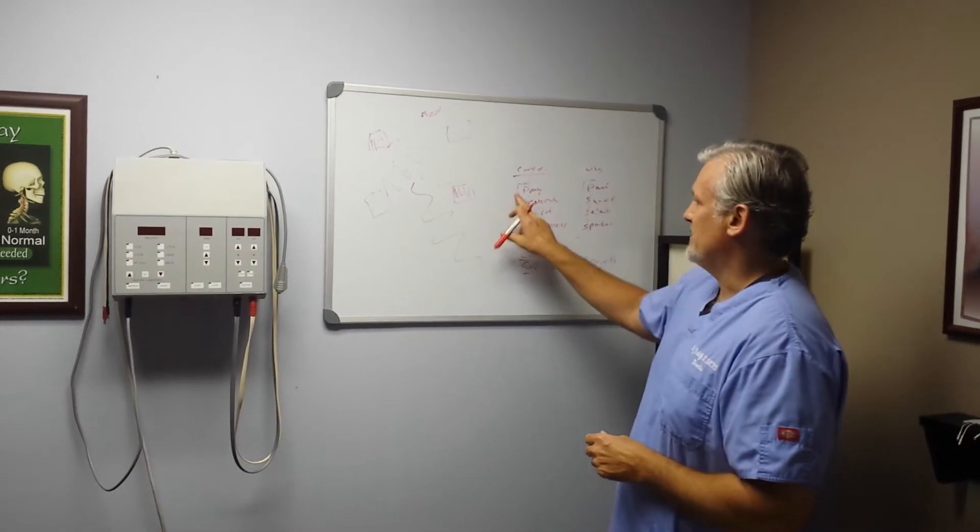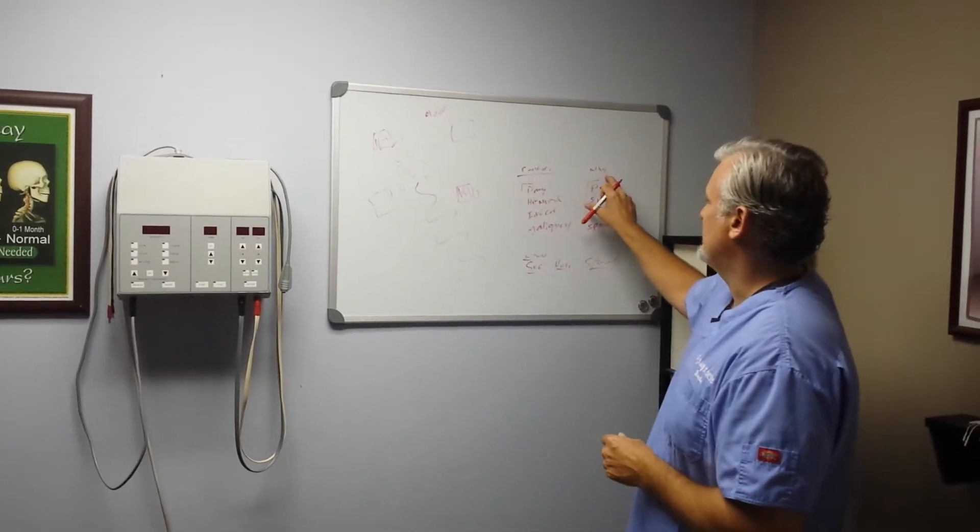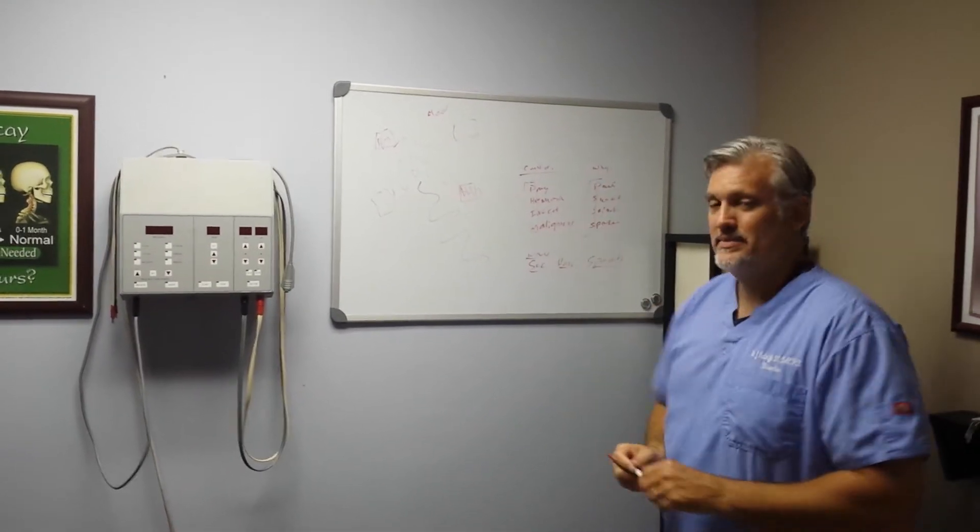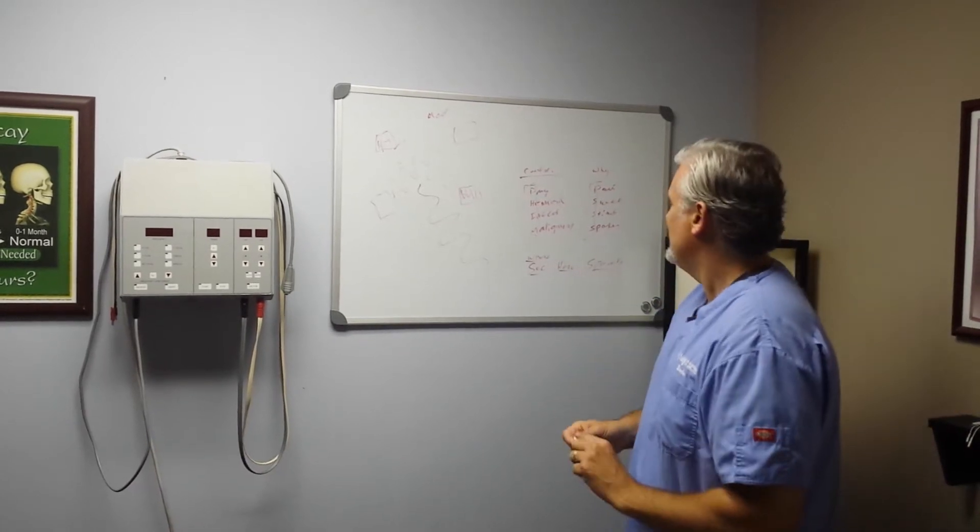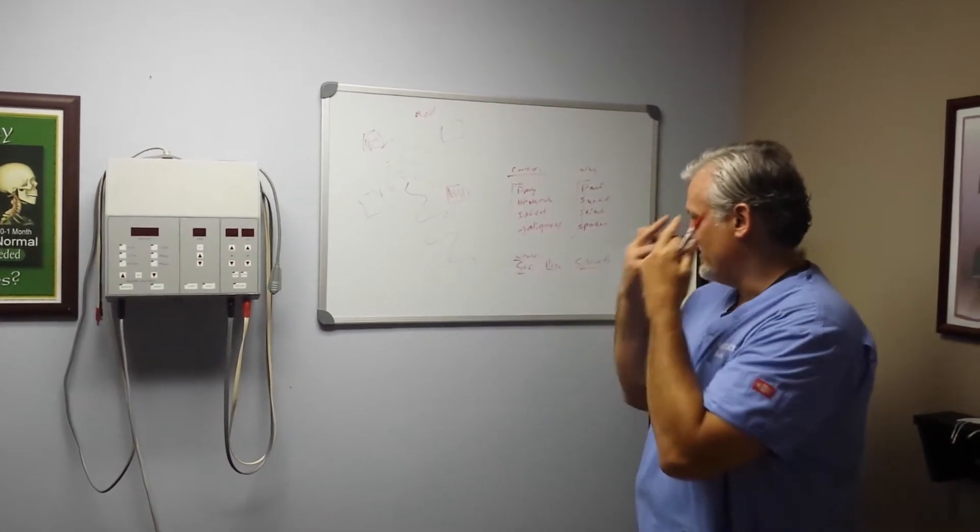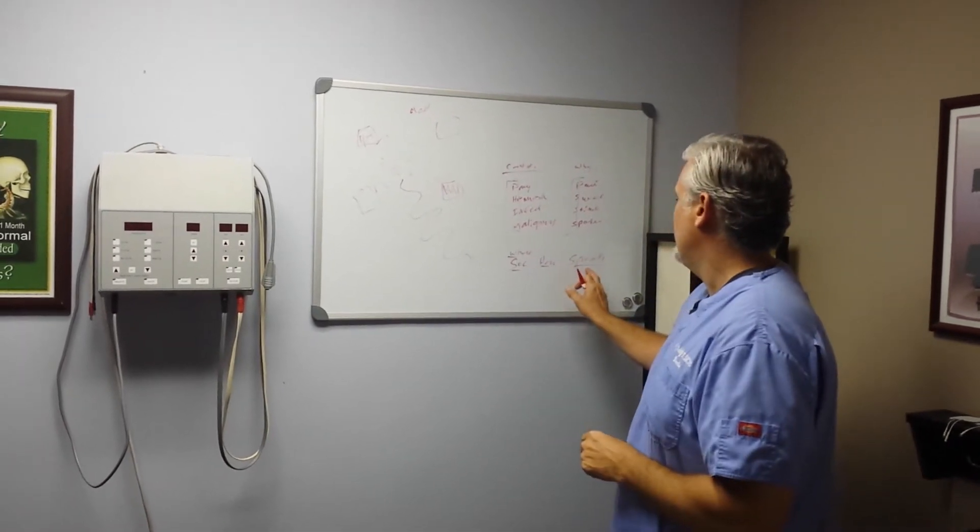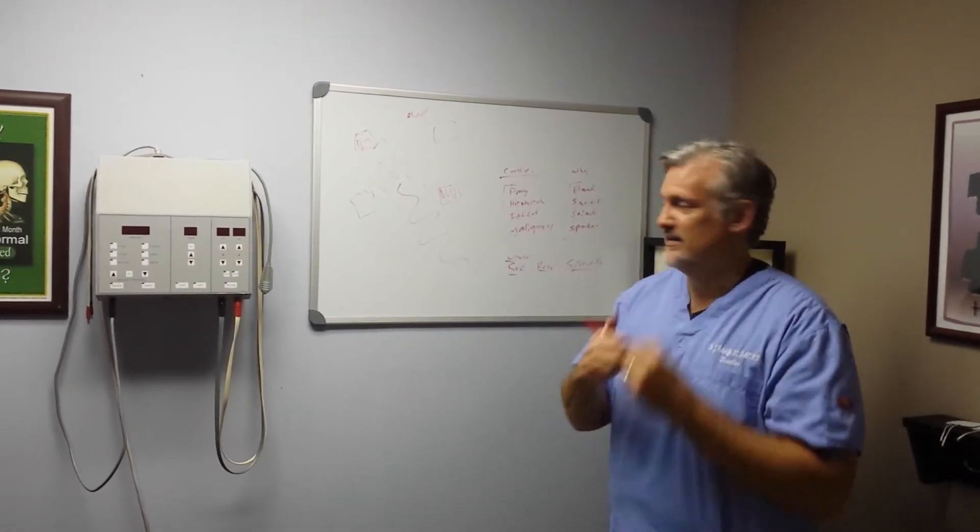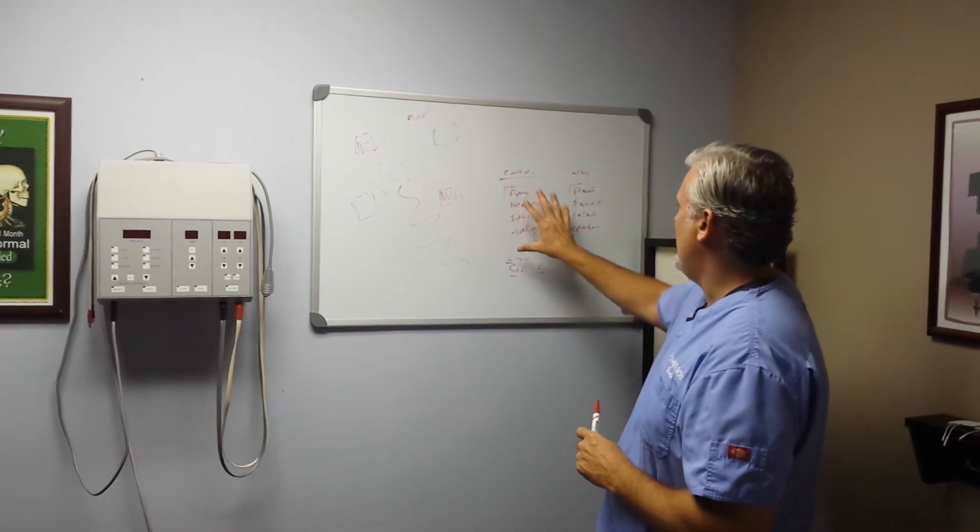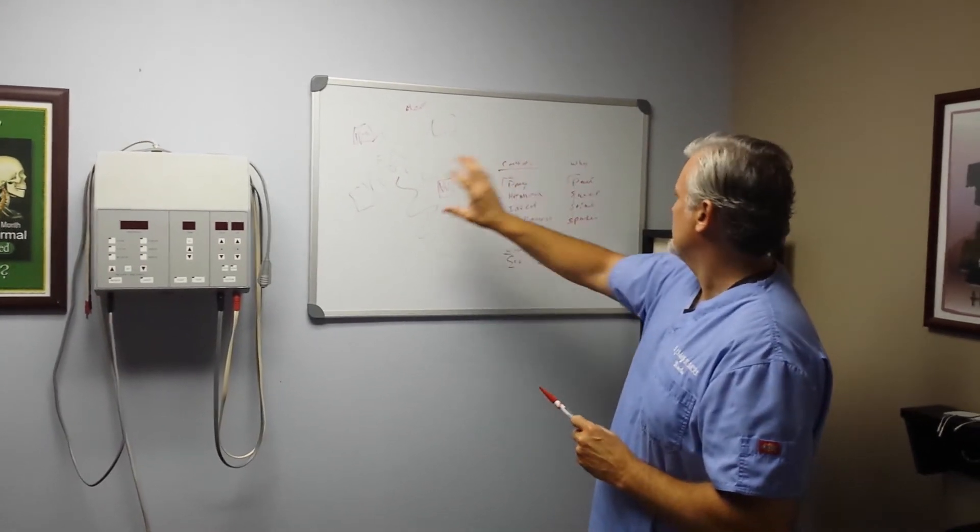So first acronym is PHIM. Next acronym why we do it would be PSST. And we don't do it over the eyes, transcranially, transthoracic with a pacemaker, or near the carotid sinus. That is the whys, and now the hows.